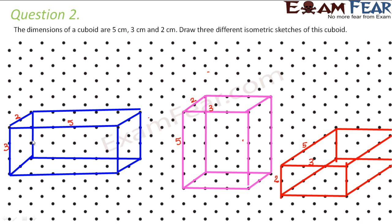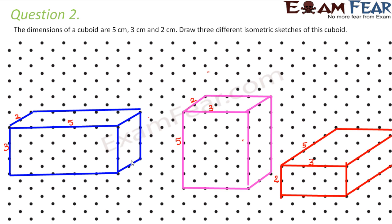When you look at these cuboids from the front, the axes at the back are not visible. For example, the first cuboid from the front shows only the visible lines; the back side lines are hidden. Similarly for the second and third views — these are three different three-dimensional views of the same cuboid.